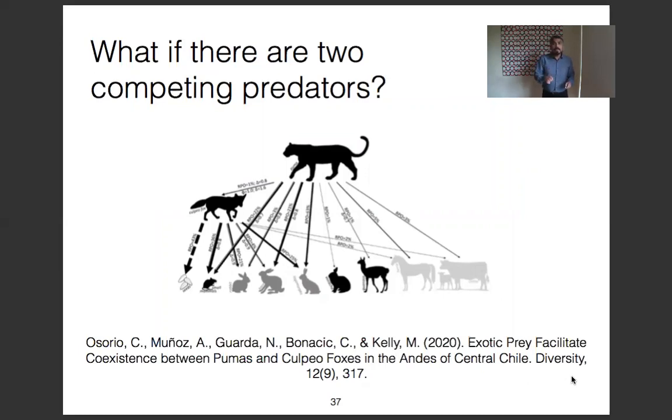Ecological theory predicts that apex predators suppress the mesocarnivores unless predators partition their ecological niche along one of the main axes of the ecological niche.